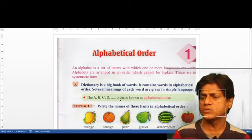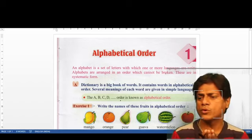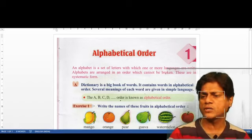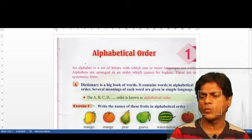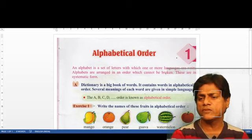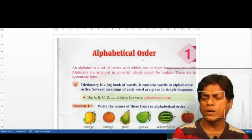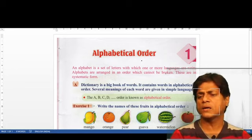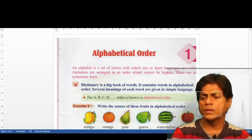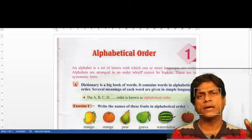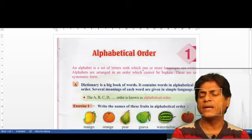Hello my dear students of class 3. Today I am going to start the first chapter of English grammar. This is chapter number 1. Look at the heading of the chapter - the heading is alphabetical order. What is the meaning of alphabetical order? Alphabetical order ka matlab hota hai - in English alphabet there are 26 letters.